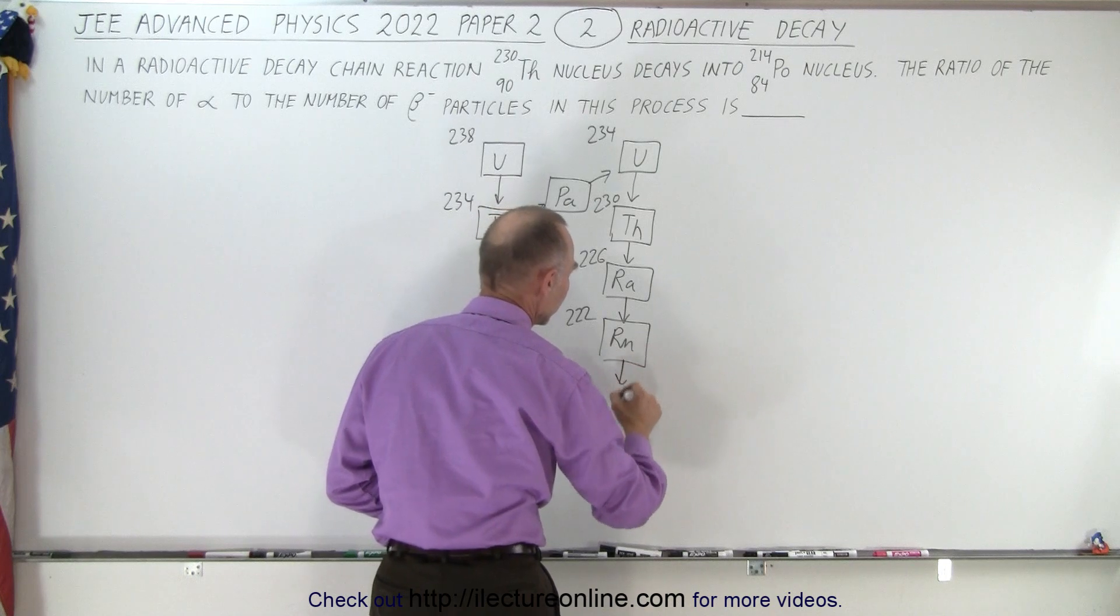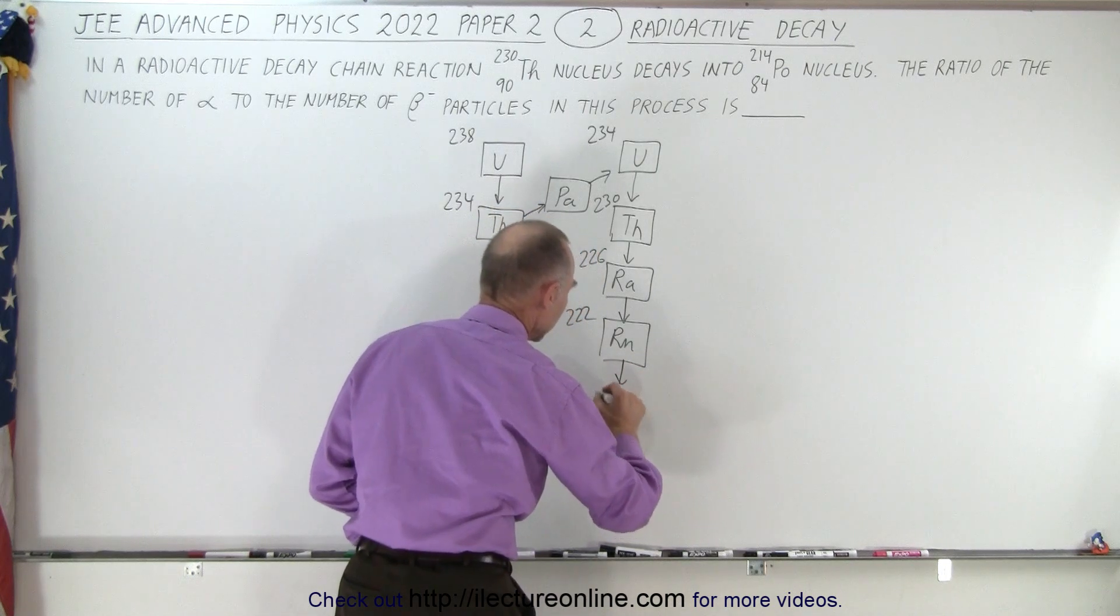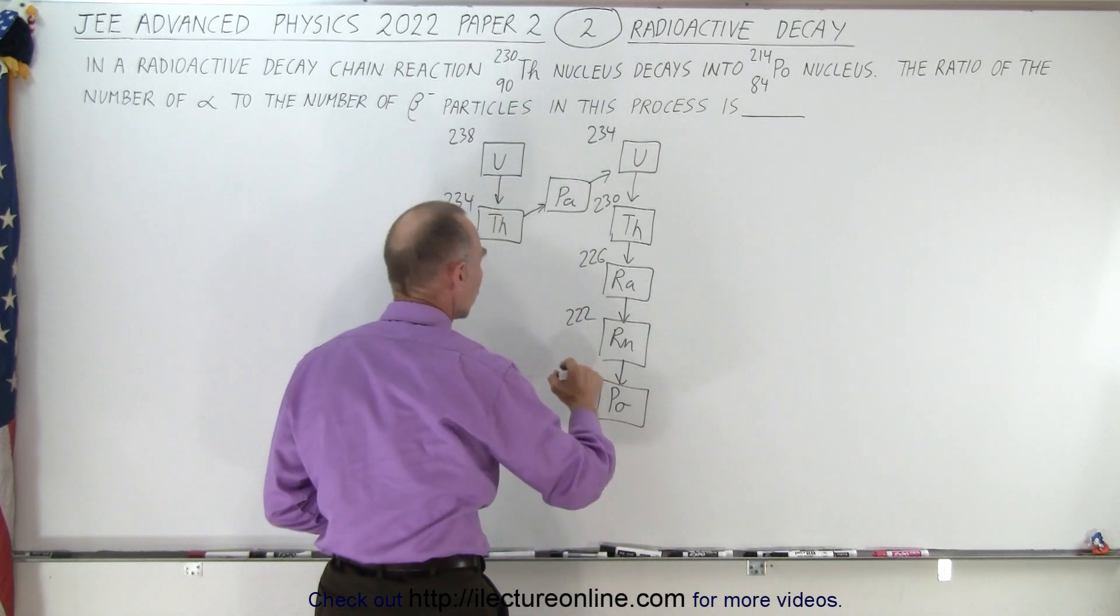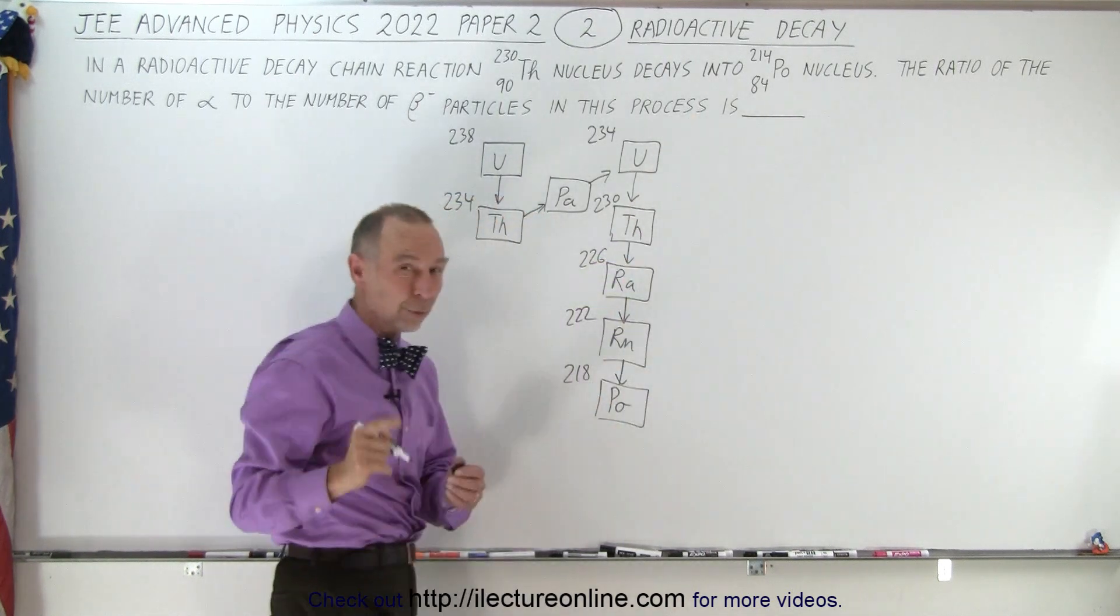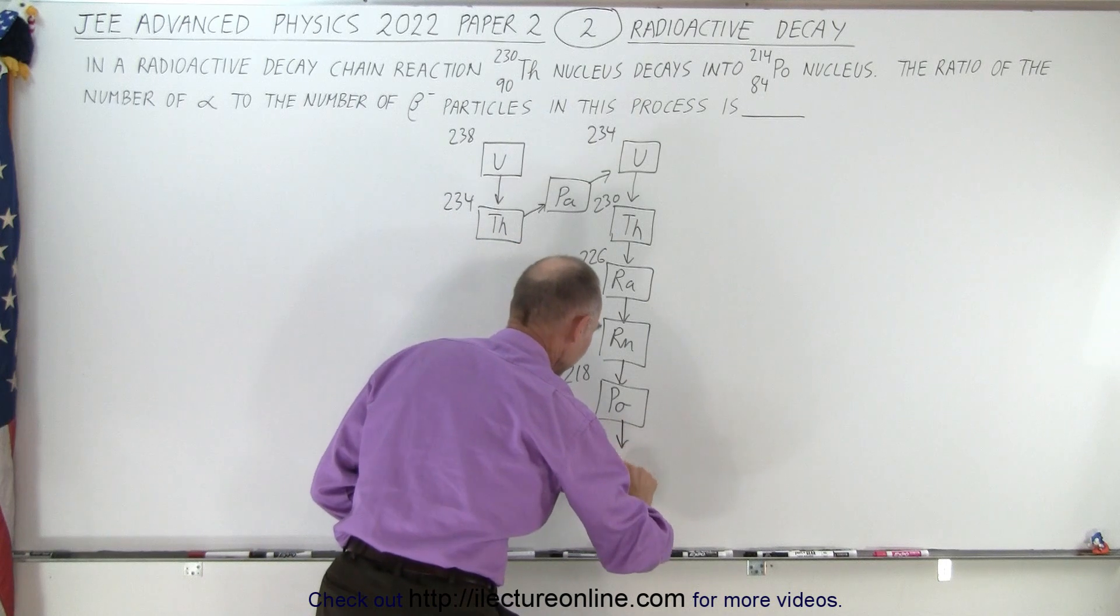Then we have another decay to polonium, now that polonium will be 218, but that's the wrong polonium because we want polonium-214. And then we have a decay to lead.